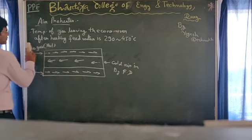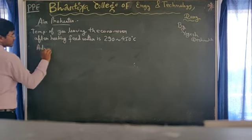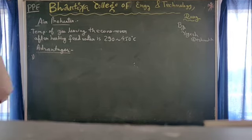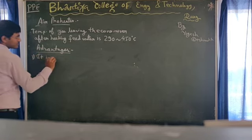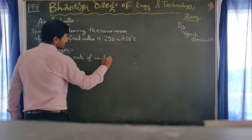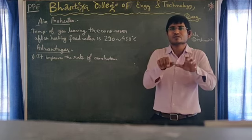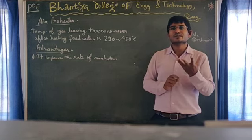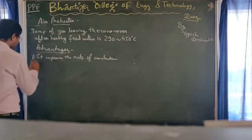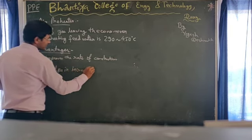Now, what are the advantages of the air pre-heater? First, it improves the rate of combustion. As the air temperature increases, the combustion temperature is already maintained because hot air is supplied to the combustion chamber. It will easily ignite and helps to improve the combustion efficiency of the coal. Second, it helps to increase the flame temperature.